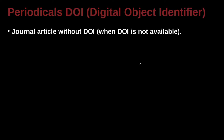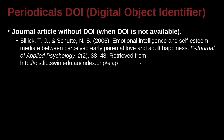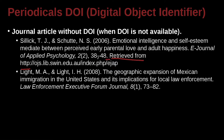A journal article without a DOI, for example, may look something like this. We go ahead and put the HTTP at the end, after the period, and we specifically write the words 'Retrieved from,' then give the address of the URL. Everything else should stay the same.